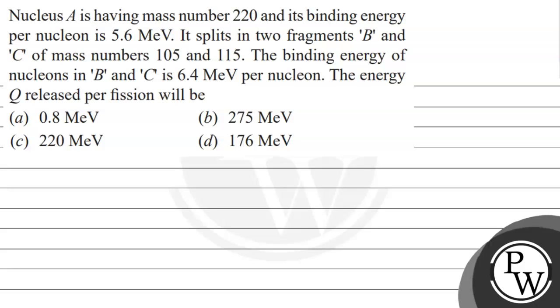Hello Bacho, let's read this question. The question says that nucleus A has mass number 220 and its binding energy per nucleon is 5.6 mega electron volt.